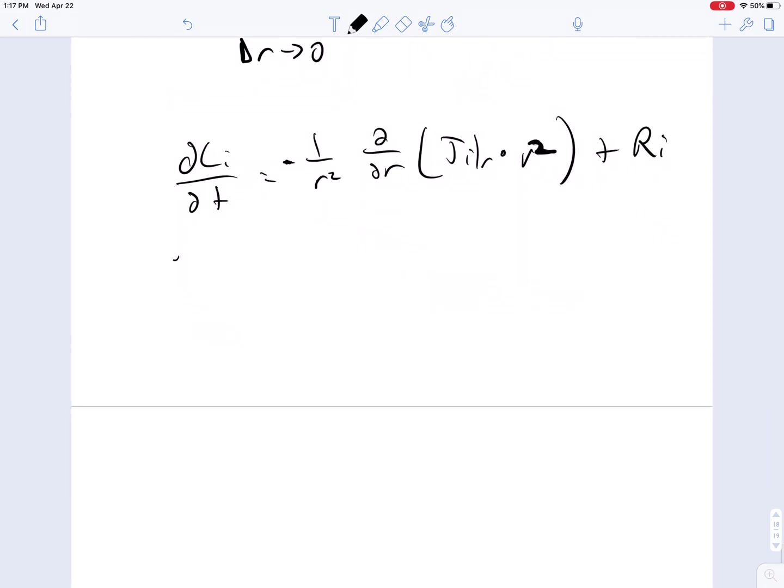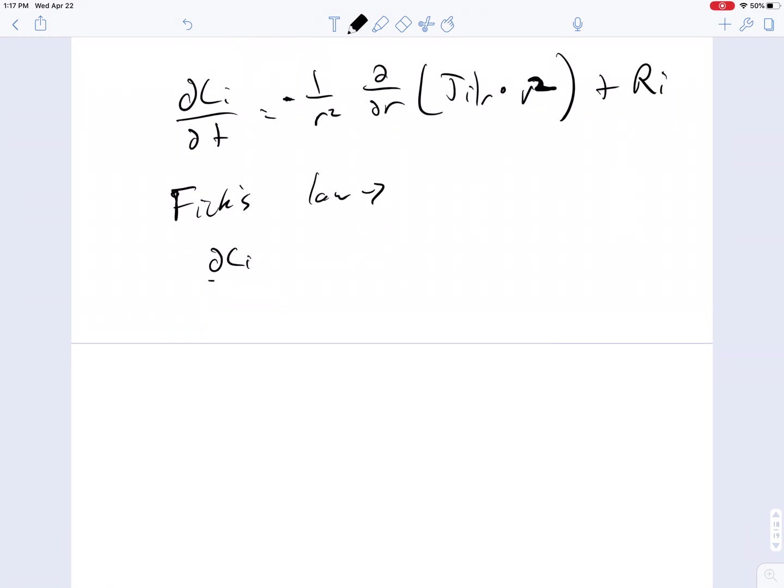So now we use Fick's law, and we make the substitution. Del Ci/del t now is equal to D/r squared - this is if D is a constant, not a function of position. If it's a function of position, you can't pull it out of the derivative right away, but you get partial/partial r times r squared, partial Ci/partial r, plus Ri.